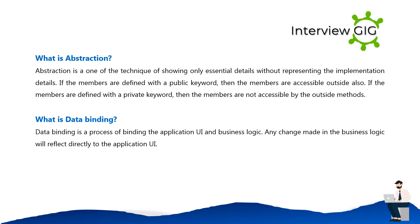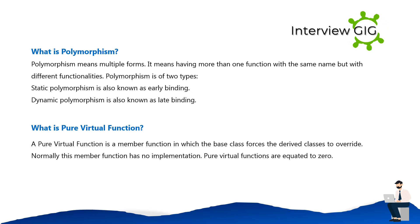What is data binding? Data binding is a process of binding the application UI and business logic; any change made in the business logic will reflect directly to the application UI. What is polymorphism? Polymorphism means multiple forms — having more than one function with the same name but with different functionalities. Polymorphism is of two types: static polymorphism, also known as early binding, and dynamic polymorphism, also known as late binding.